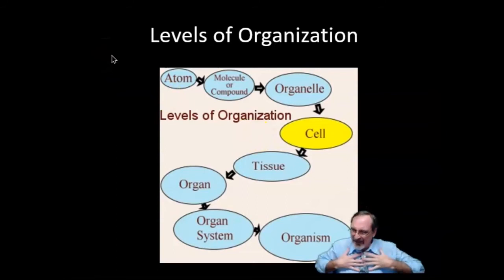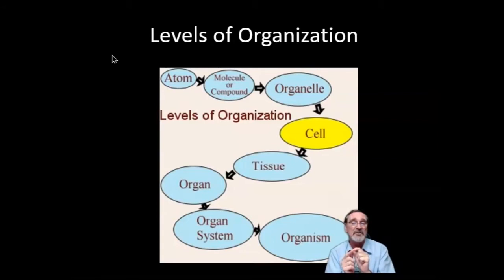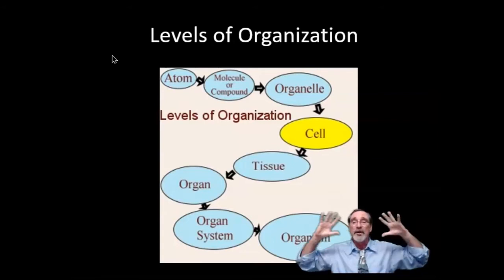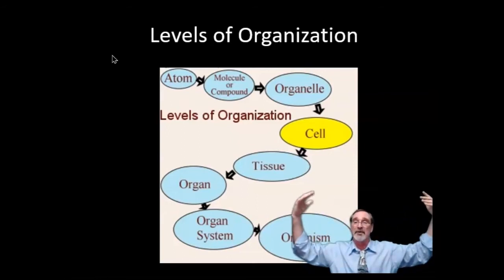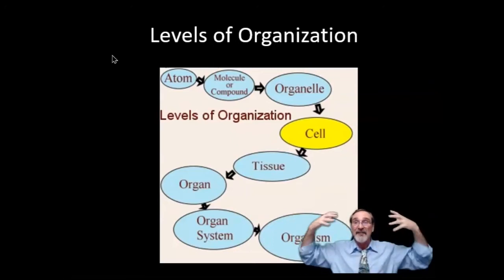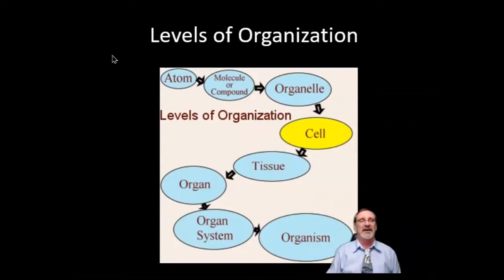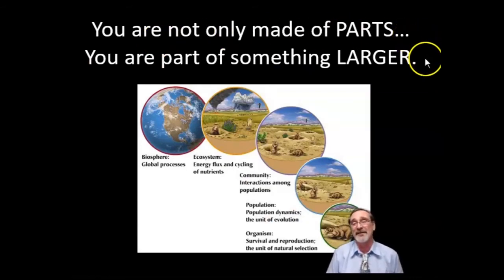People talk about life like what are we made out of — we're made of atoms — as if the scale only goes down to the smaller and smaller of what we're actually made of. But it turns out if you look at the big picture, we are not only made of smaller parts, we are also part of something bigger than ourselves. So that's what this second levels of organization lesson is about: the levels that are bigger than us. Write this down: you are not only made of parts, you're part of something larger.